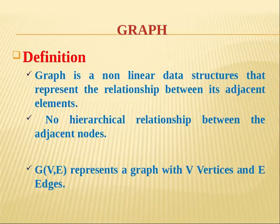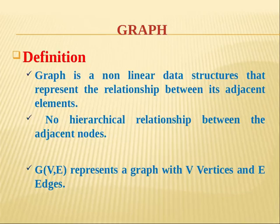First, what is the definition of a graph? A graph is a nonlinear data structure that represents the relationship between its adjacent elements. It tells you what relationship each element has, represented by the graph. There is no hierarchical relationship between adjacent nodes. G is the graph, which has elements V and E — V is the vertex or nodes, and E is the edges that connect between the nodes or vertices.